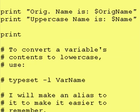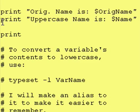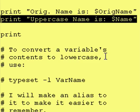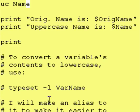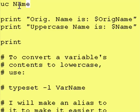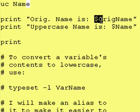We then do a print statement saying here's our original name, and we're printing orig_name, followed by printing what it would look like in uppercase. After running the uc command, the contents of name are changed to all uppercase, so whatever was in there originally is now gone. We print dollar name, which should be the all-uppercase version of whatever was in orig_name.